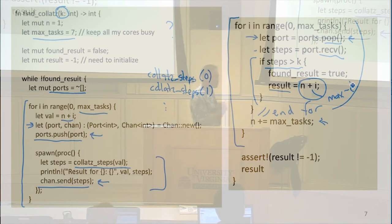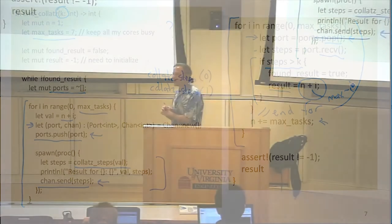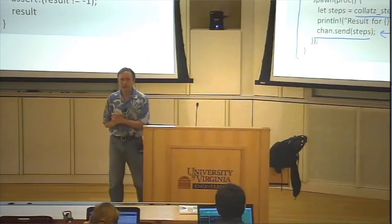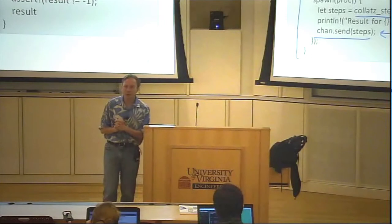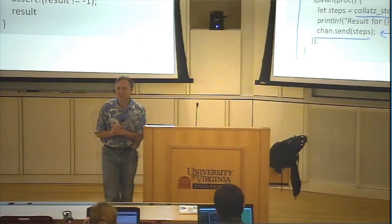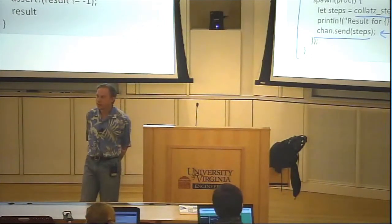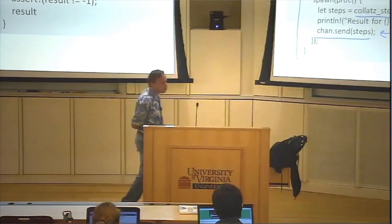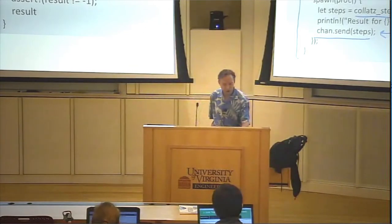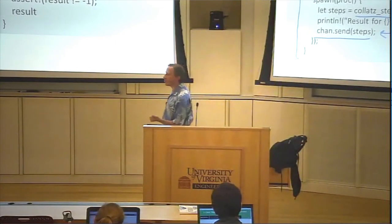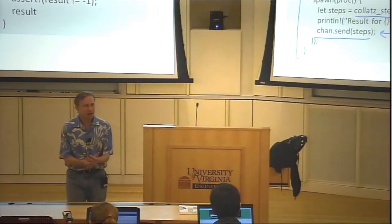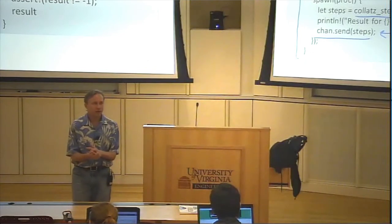So how well, assuming we fixed that bug, how well is this using our cores? Do we expect this is going to be getting an eight times or seven times speed up that we're hoping for? What don't we like about this? Let's see, first thing, so when we spawn one of these processes, what happens to that task after it finishes? Is that core doing anything after that?